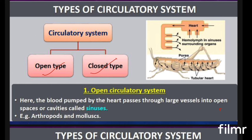In the open circulatory system, blood is pumped by the heart through large vessels into open spaces or cavities called sinuses. The blood is not pumped through closed blood vessels; instead, it enters large common cavities in which all the organs are immersed, and exchange occurs through diffusion. Such a system is known as the open circulatory system.